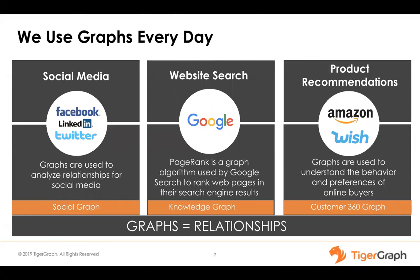On other websites like Amazon and Wish.com — various places where we all shop — they sell products to you, but how do they recommend the product you need to buy? It's graph underneath it all along, whether it's in a customer 360 perspective or a recommendation system which is used underneath it. So you use graph every day; it's just that many of us are not aware of that.